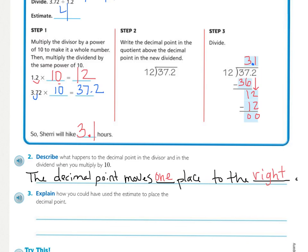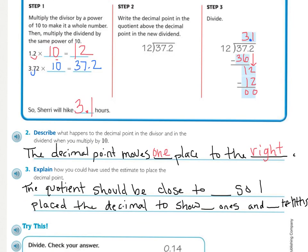Looking at the explain. How could you have used the estimate to place the decimal point? Remember what your estimate was and how could that have helped you place it. My sentence is, the quotient should be close to 4, so I placed the decimal to show 3 ones and 1 tenth. Because if I had the decimal before the 3, that would read 0.31, which is nowhere close to 4. And if I had the decimal after the 1, that would be 31, and that's even farther from 4. So, the most reasonable place to put the decimal point so that it is close to 4 is between them. So, it's 3 ones and 1 tenth.